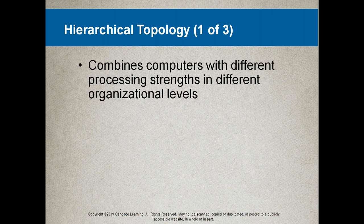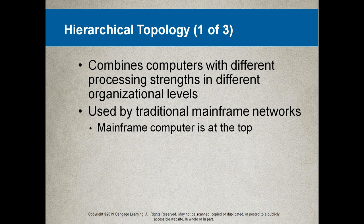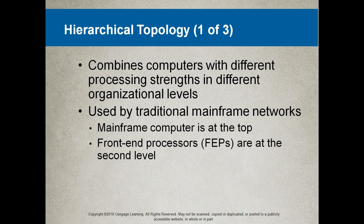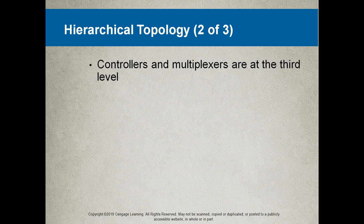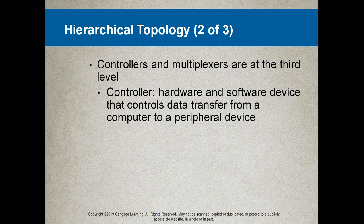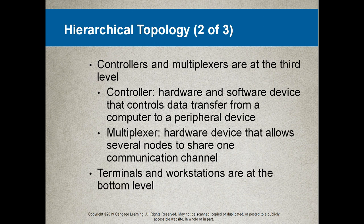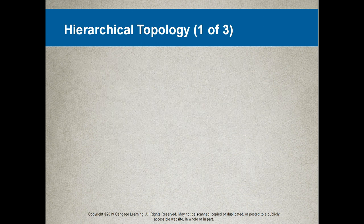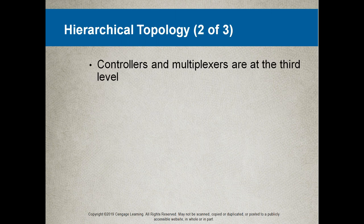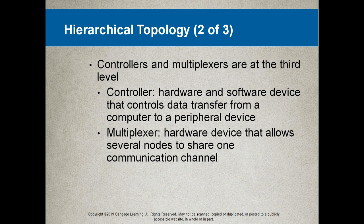A hierarchical topology combines computers with different processing strengths in different organizational levels and is used by traditional mainframe networks. The mainframe computer is at the top, front-end processors at the second level, controllers and multiplexers at the third level, and terminals and workstations at the bottom. The multiplexer is a hardware device that allows several nodes to share one communication channel. In my opinion, the hierarchical topology is largely obsolete — just know that such a system can exist, but concentrate on bus, star, and ring.